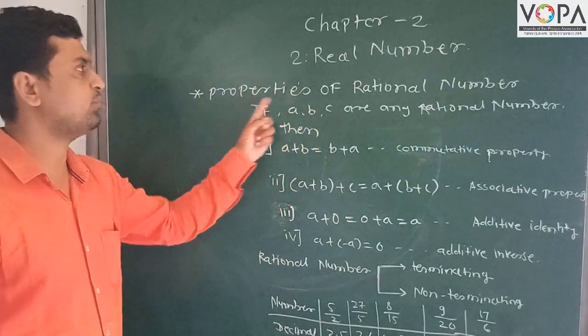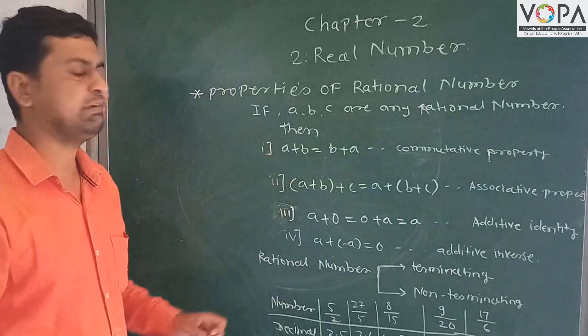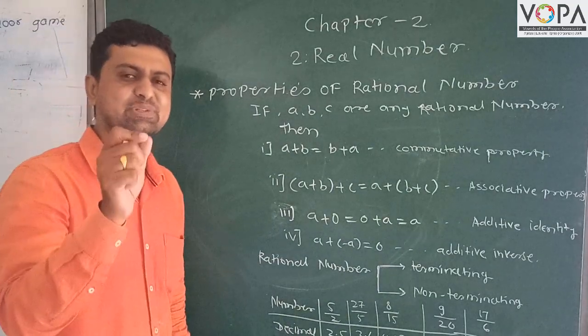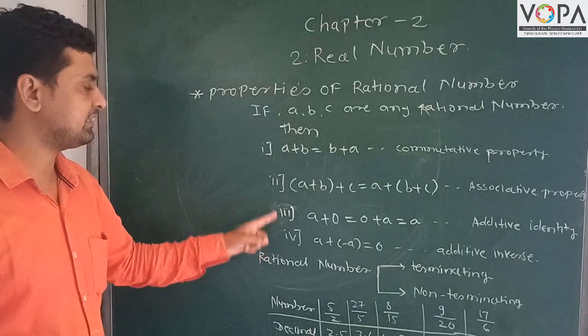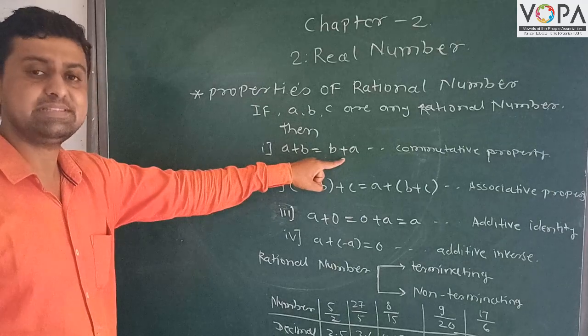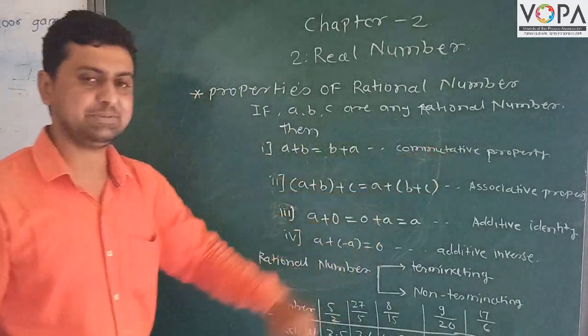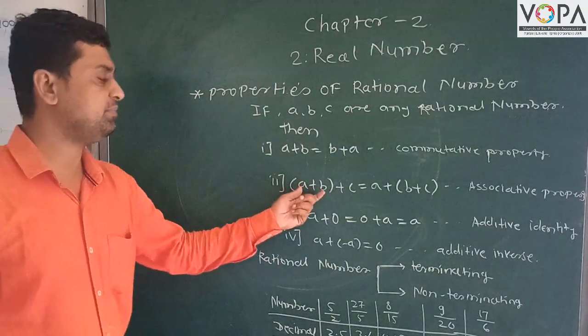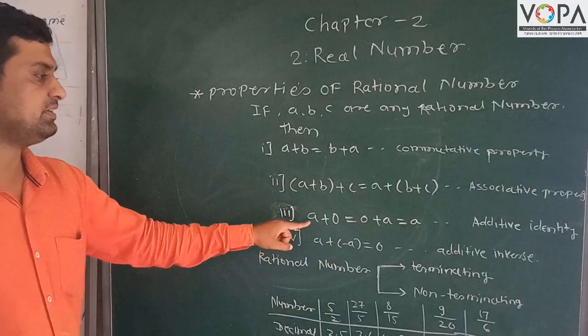Let us see properties of rational numbers. If a, b, c are any rational numbers, then: first, a + b = b + a is called the commutative property. Second property is associative: (a + b) + c = a + (b + c).